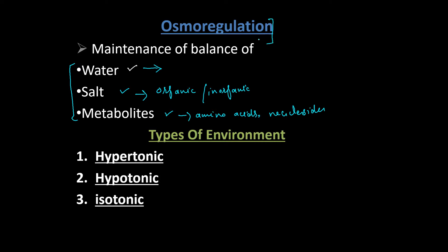Next, types of environment — water, salt, and metabolites. We will see how many types of environment there are. There are three types of environment: hypertonic, hypotonic, and isotonic.